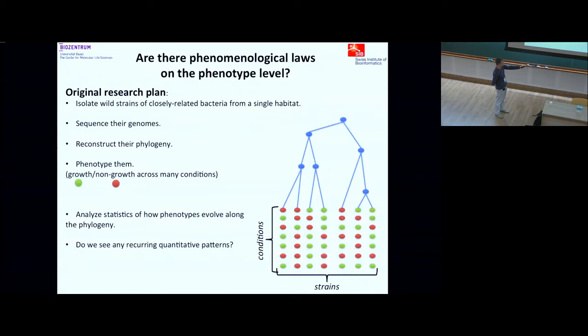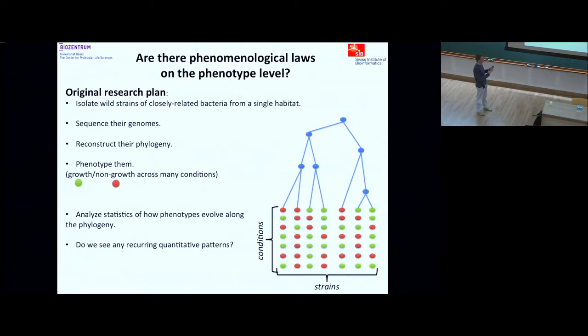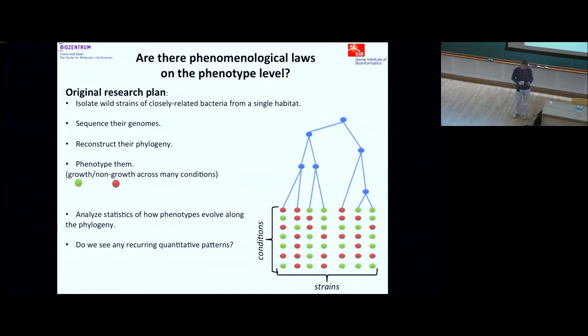Then I wanted to develop models where evolution along the branches of this tree has to explain the phenotypes observed at the leaves. I wanted to learn about the statistics of phenotypic changes along branches — are they correlated? I wanted to look phenomenologically at whether there are recurring quantitative patterns. As you will see today, that plan already broke down here.